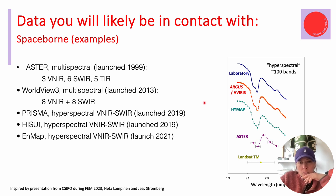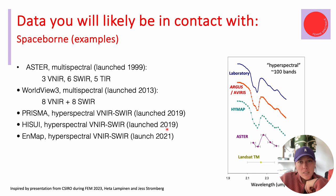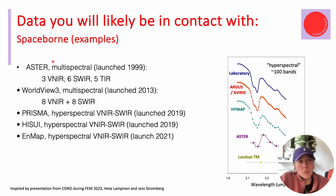I'm going to name a couple of different platforms and instruments you'll likely encounter when looking at this type of data. Starting with space-borne examples — this is based on a presentation from Heta Lampin and Jess Stromberg from CSIRO during the FEM conference in 2023, so thank you for that. In the space-borne category, we have ASTER, which is relevant for spectral geology because it's active in the shortwave infrared between 2,100 and 2,400 nm — where most mineral information sits. Even though it's multispectral, it's often still used for exploration even though it was discontinued around 2016.